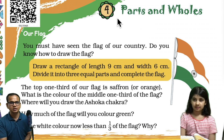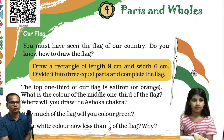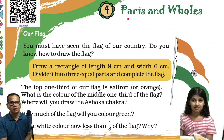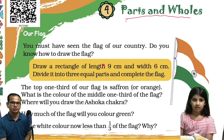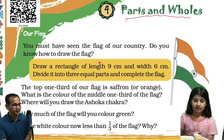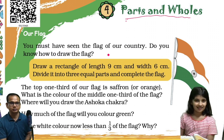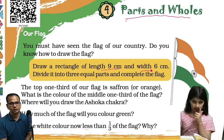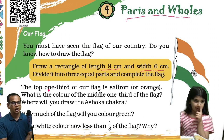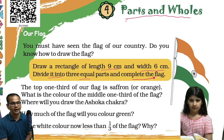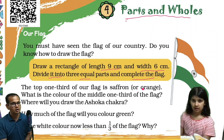The chapter name is Parts and Wholes. You must have seen the flag of our country. Do you know how to draw the flag? Yes. Good, very good. Draw a rectangle of length 9 cm and width 6 cm, and divide it into 3 equal parts and complete the flag. Can you draw? Yes.